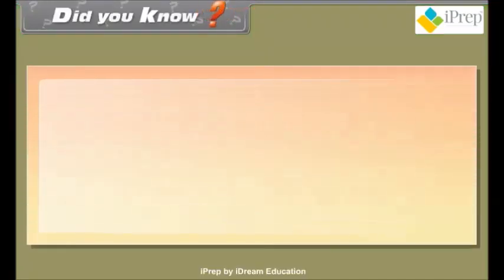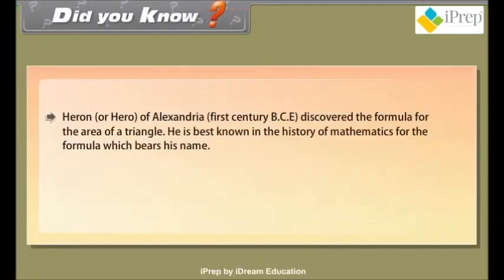Did you know? Heron or Hero of Alexandria, 1st century BCE, discovered the formula for the area of a triangle. He is best known in the history of mathematics for the formula which bears his name.